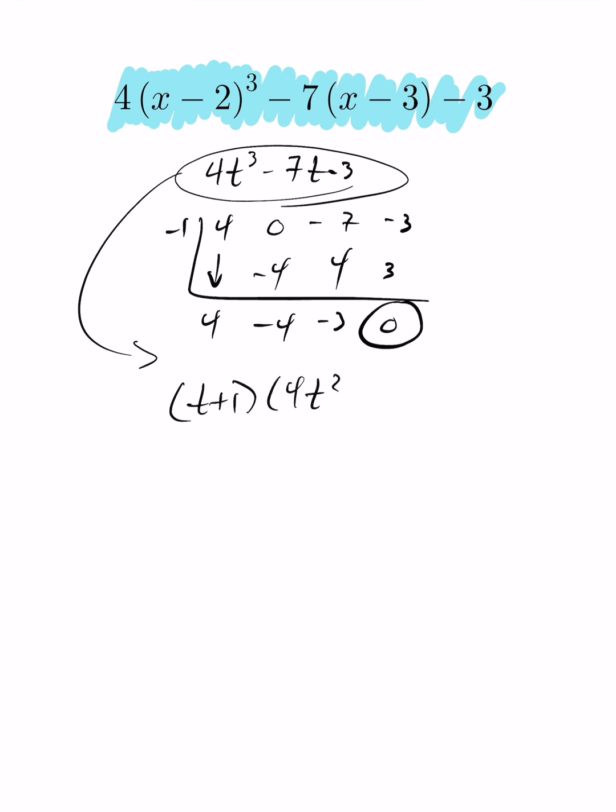This polynomial breaks down into (t+1) times (4t²-4t-3). Now if we look at this expression here, we can factor this.